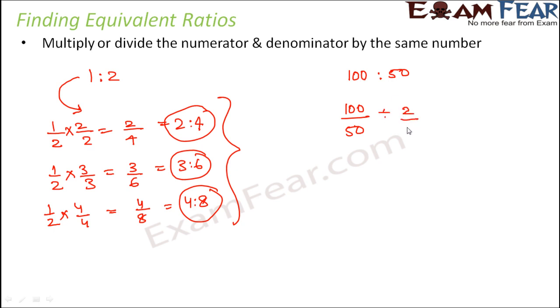So instead of multiplying here, you divide by the same number. For example, if you divide it by 2, you get 50 by 25, that is 50 is to 25.